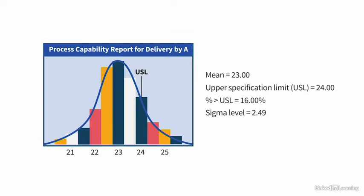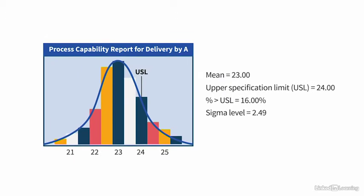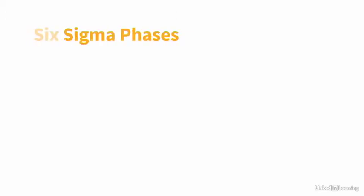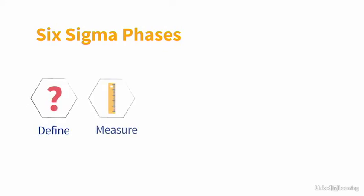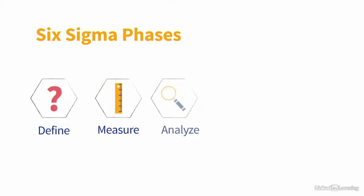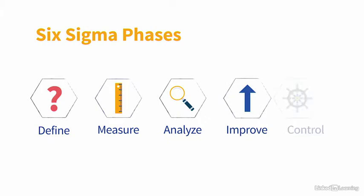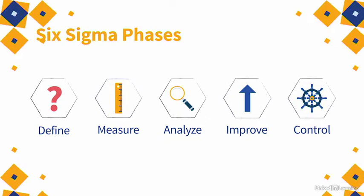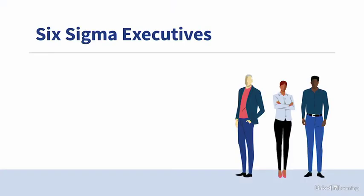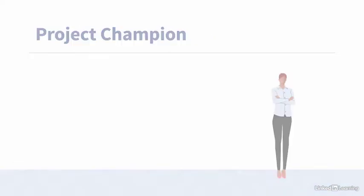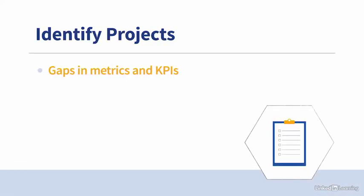In this course, I will share with you the key concepts of Six Sigma. We will cover the five phases of a Six Sigma project: Define, Measure, Analyze, Improve, and Control. We'll examine the roles of executives, champions, and the different belts, and how to select the right projects for Six Sigma.